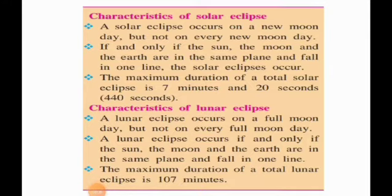Let us now see the characteristics of solar eclipse and lunar eclipse. A solar eclipse occurs on a new moon day, but not on every new moon day. A solar eclipse occurs if and only if the sun, the moon, and the earth are in the same plane and fall in one line. Since they don't always align in the same plane, we don't have a solar eclipse on every new moon day. The maximum duration of a total solar eclipse is 7 minutes and 20 seconds.